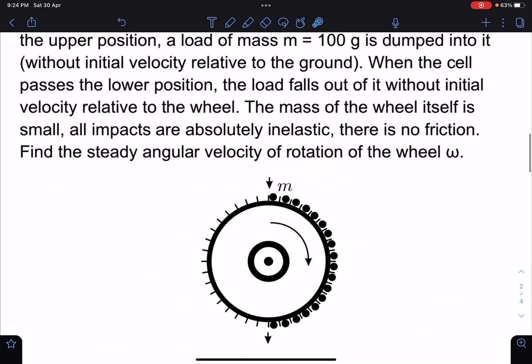Once you can see when it will rotate by an angle of pi, when it is coming here, this load will just fall off this without any initial velocity relative to the wheel. So there is the catch here.